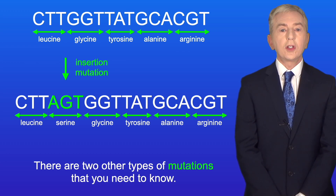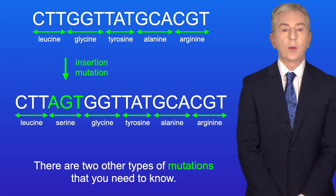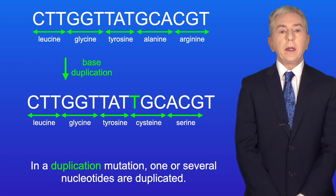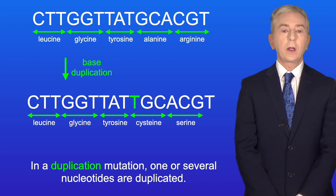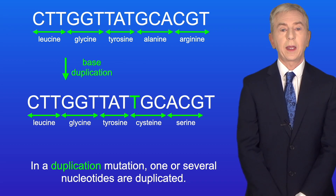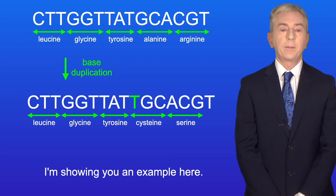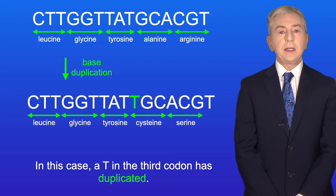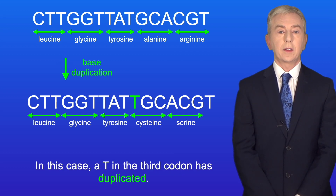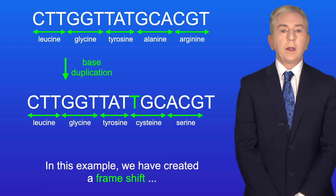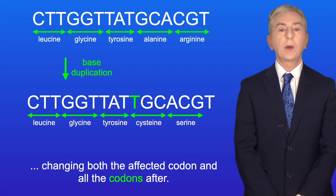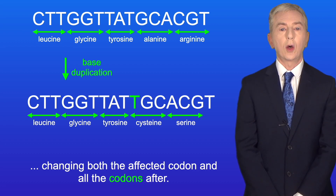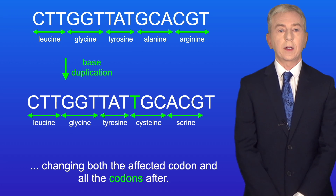Now there are two other types of mutations that you need to know. In a duplication mutation, one or several nucleotides are duplicated. In this example, a T in the third codon has duplicated. In this case, we've created a frame shift, changing both the affected codon and all the codons after.